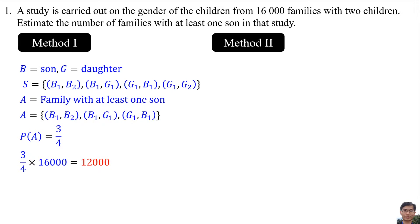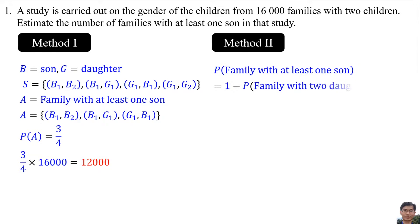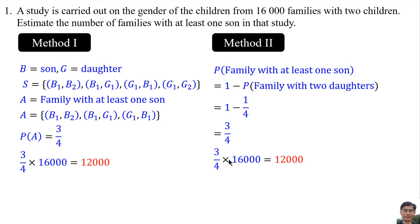Method 2: The probability of a family with at least one son equals 1 minus the probability of a family with 2 daughters. This equals 1 minus 1 over 4, where 1 represents the outcome G1,G2, and 4 represents the 4 elements in the sample space. So the probability is 3 over 4, and 3 over 4 times 16,000 equals 12,000.